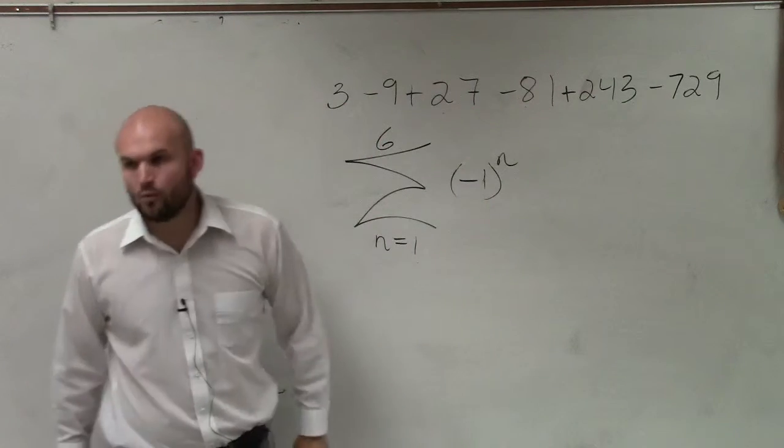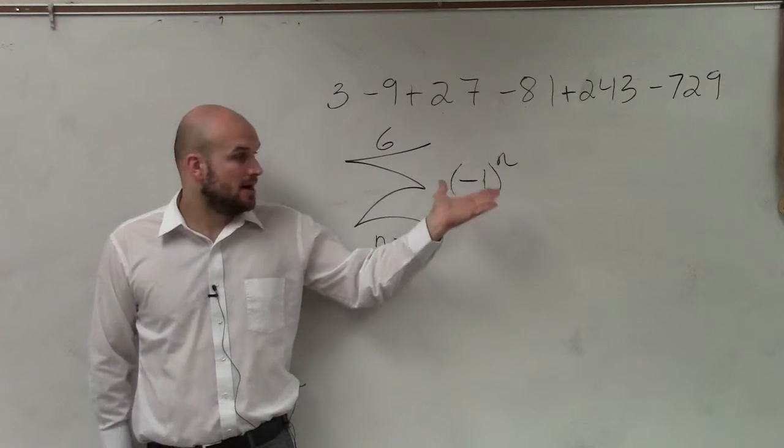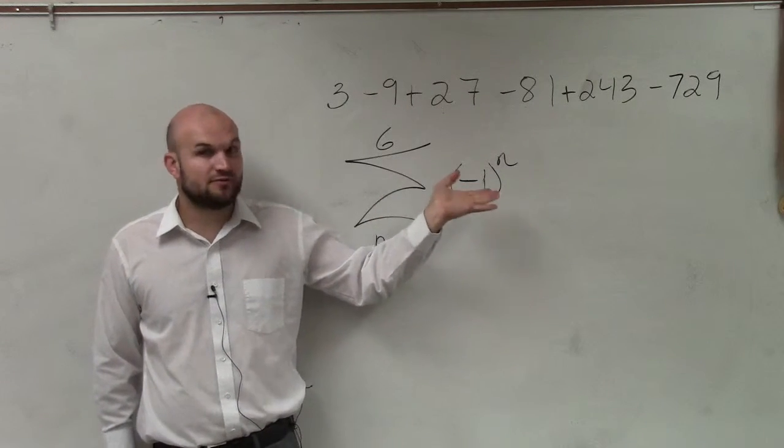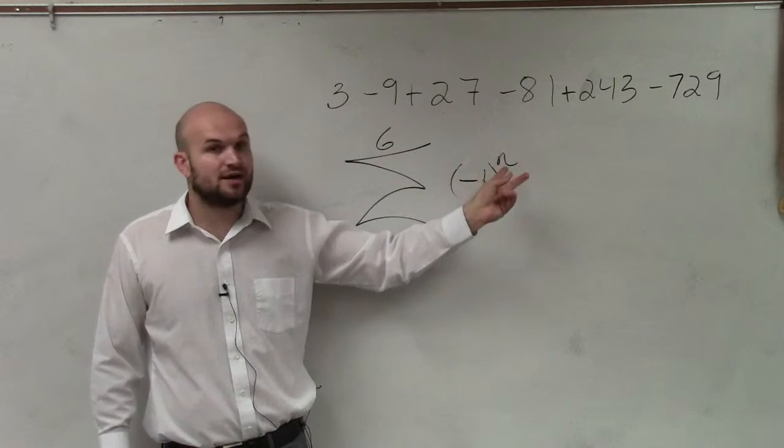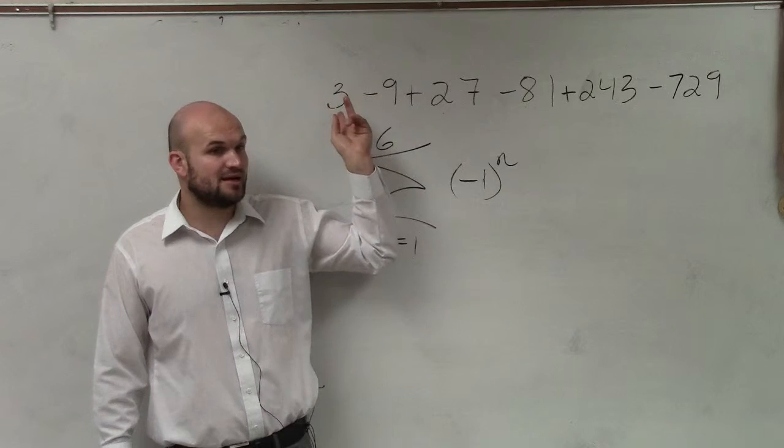So we're going to start at 1, and we're going to go up to 6. Now, we have the alternating signs. But let's be a little careful with this. If we have this alternating sign, if I put a 1 in there, that means the first term is negative, correct? And is our first term negative?